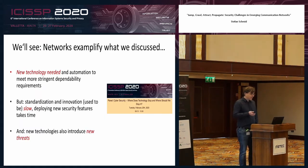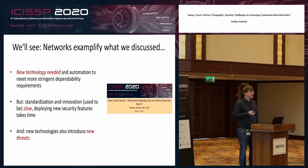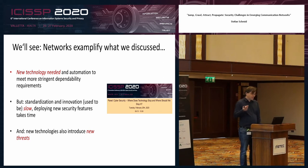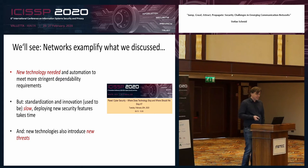A lot of the things we discuss in the context of networks are connecting to the topics we had yesterday in the panel. Because on the one hand, in networks we really need new technology. I will show you why we believe we should innovate the networks a lot in the near future. There is also the issue that standardization and innovation is relatively slow in this context.